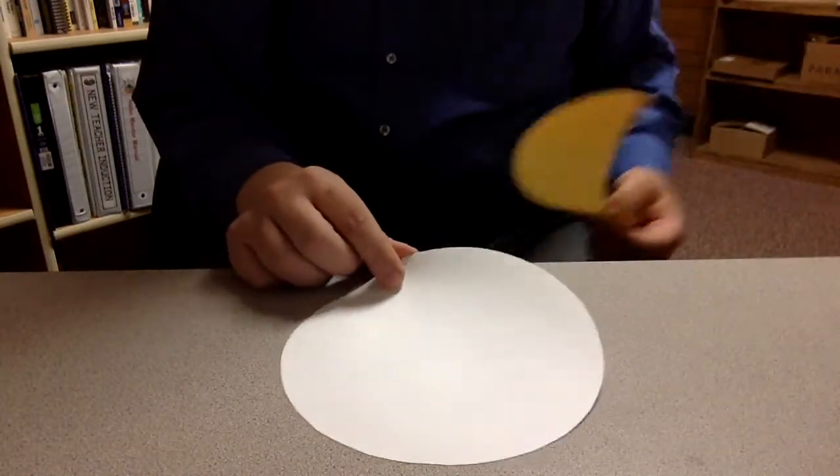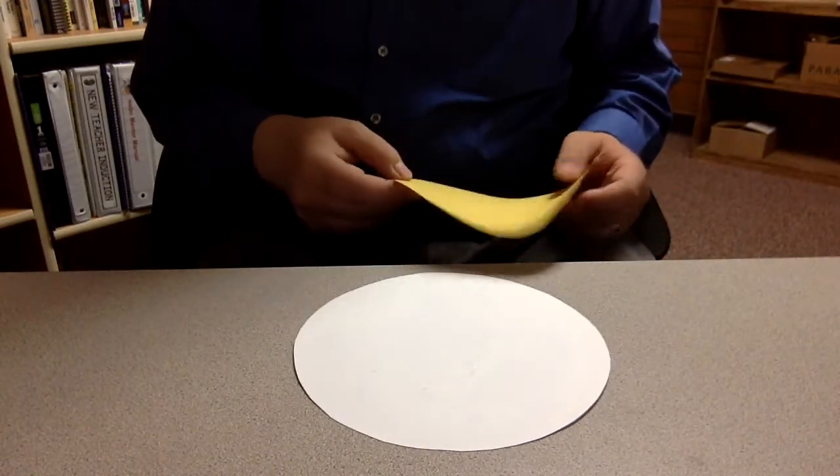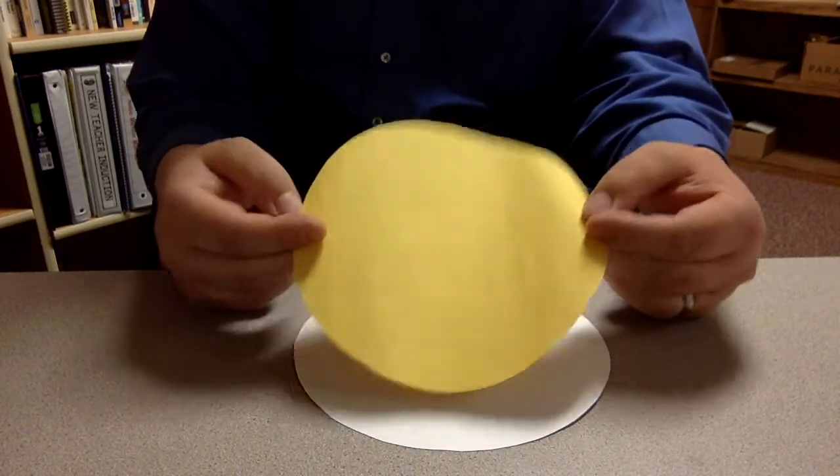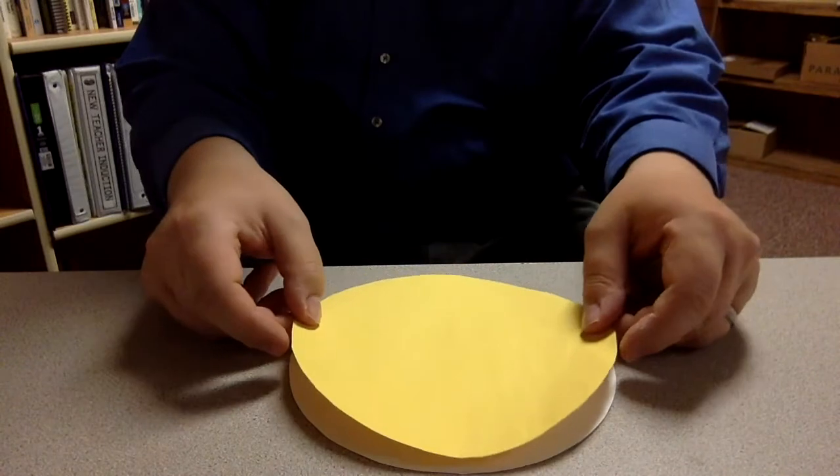So you'll need some cardstock and you'll need pictures of the planets. You can either print those off from nasa.gov or you can just make them out of construction paper and draw on them.